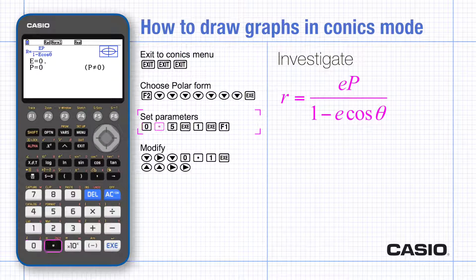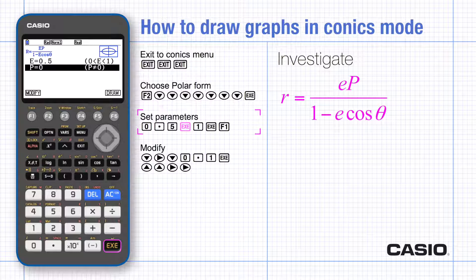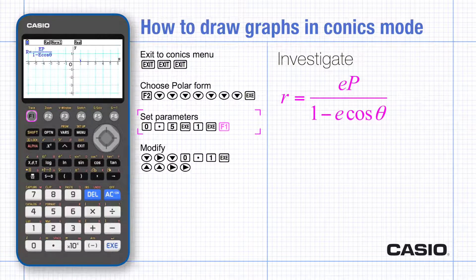Next set the parameters. I'm going to use 0.5 here for e and p equals 1, but I'm going to change them later. F1 to modify.